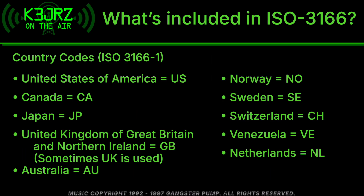Here are some examples of country codes listed as ISO 3166-1. The United States of America is US. Canada is CA. Japan is JP. The United Kingdom — full name: United Kingdom of Great Britain and Northern Ireland — is GB. Australia is AU. Norway is NO. Sweden is SE. Switzerland is actually CH. Venezuela is VE. And the Netherlands is NL.